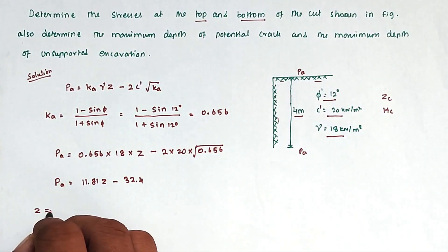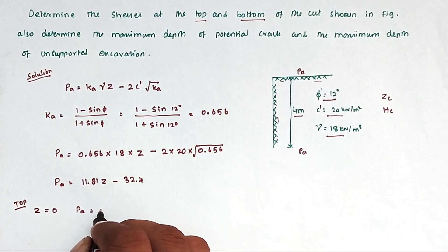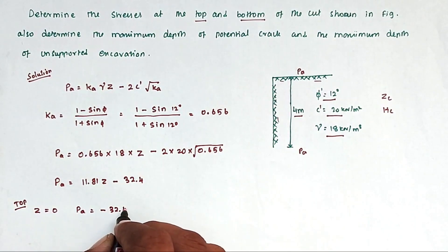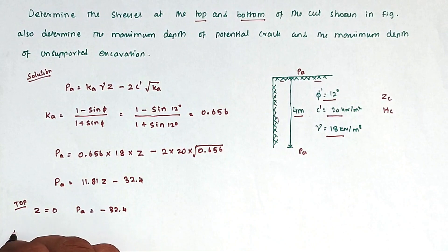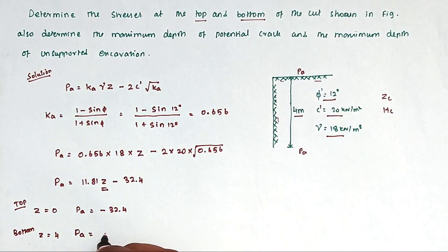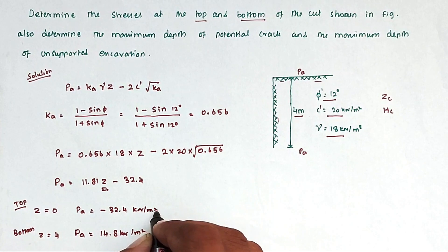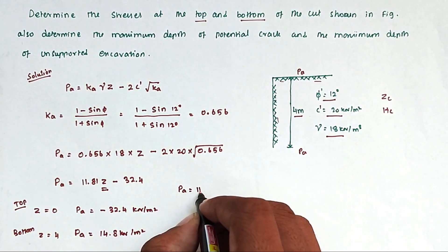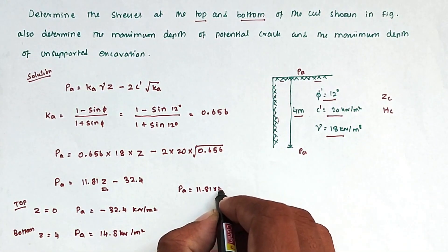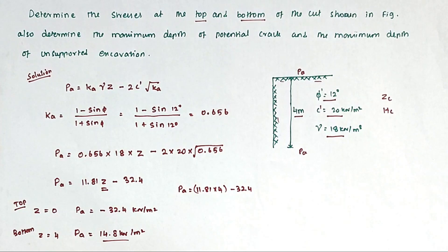At the top of the cut, Z = 0, so PA = −32.4 kN/m². At the bottom of the cut, Z = 4 meters. Substituting: PA = 11.81 × 4 − 32.4. Solving this, we get PA = 14.8 kN/m².